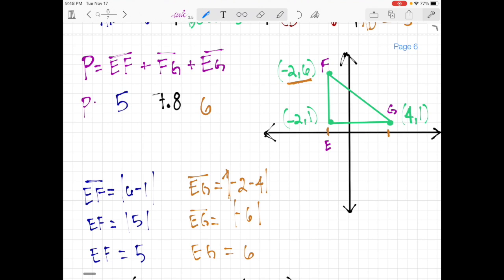And now we can say, all right, well, perimeter is going to just be these all added together. So five plus six, that's 11. 11 plus 7 is 18, plus 0.8 is going to be 18.8.